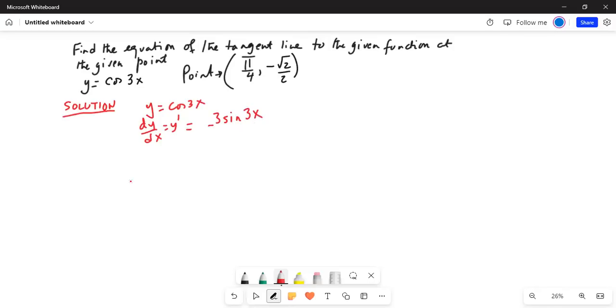So we will find the value. Remember the point is pi by 4 and minus square root of 2 by 2. That means x is pi by 4, right? And y is minus square root of 2. These are the coordinates of the ordered pair.